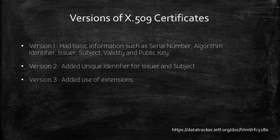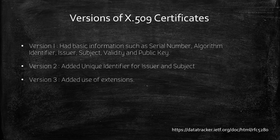Now let's talk about the versions of X.509 certificates. There are three versions: version 1, version 2, and version 3. Version 1 was introduced in 1988. They only had some basic information such as serial numbers, subject name, signature algorithm, issuer name, validity, and the public key. Version 1 certificates were found to be lacking some features, because of which it was revised as version 2. Version 2 certificates included a unique identifier for the issuer and the subject along with the properties of version 1. It was again revised as version 3 because of some features it lacked, and version 3 certificates started using extensions along with the properties from version 1 and version 2.